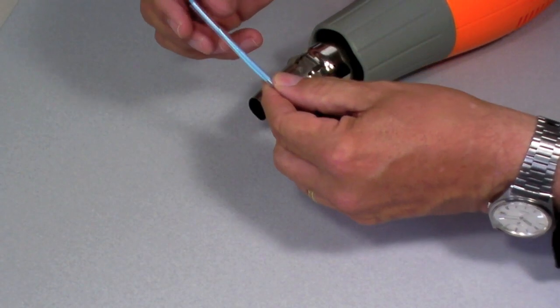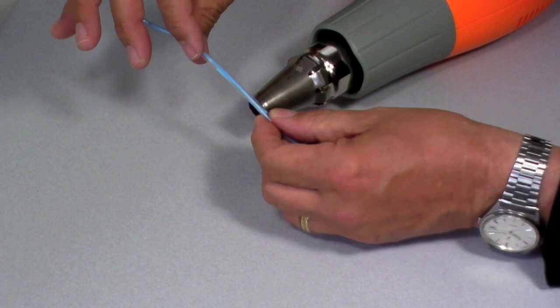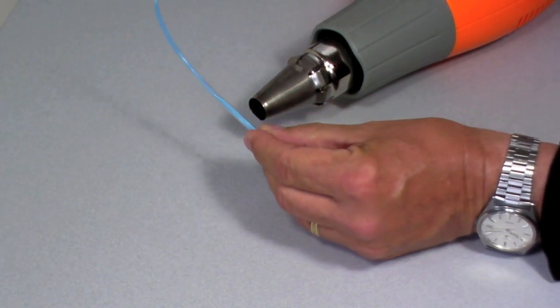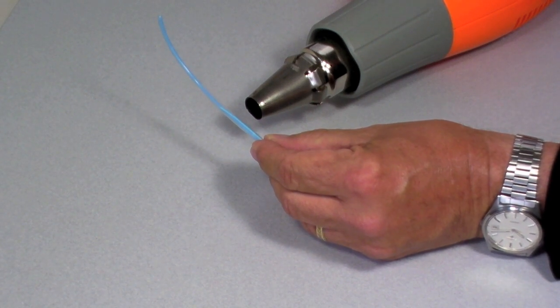Just double-check to make sure it's covering the damaged area properly, and it is. Line it all up. Now the first step, like other welds that I've done, I always snug it down first.